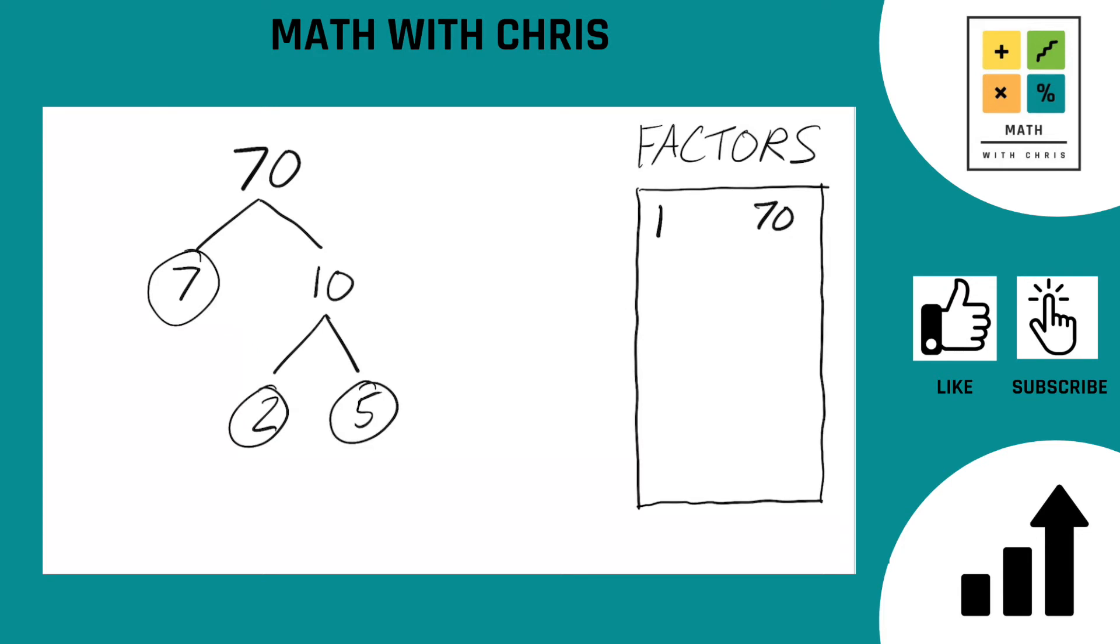Our factor tree is done pretty quick here. Any path you take, any branch you go off, you end up in a circled prime number. That's what you're looking for when working with factor trees. So our prime factors of 70 are 7, 2, and 5. Let's put those in order: 2 times 5 times 7. That does indeed give us 70.